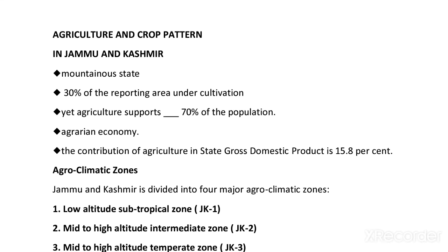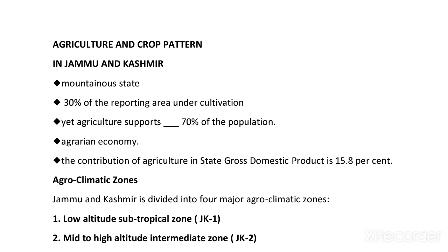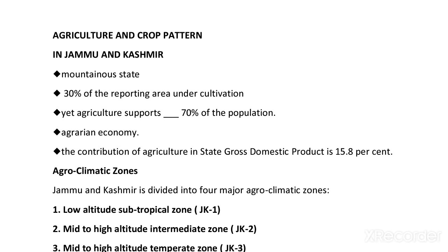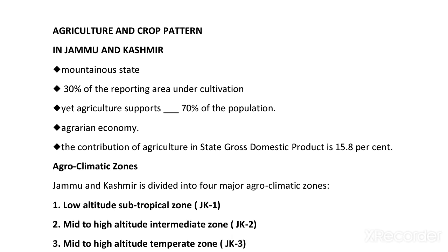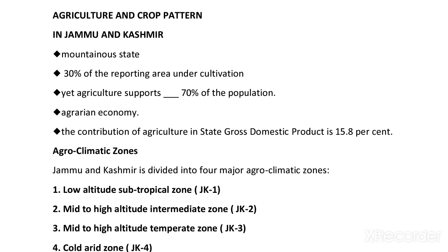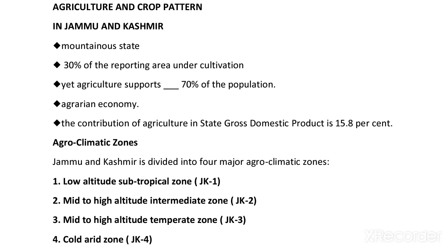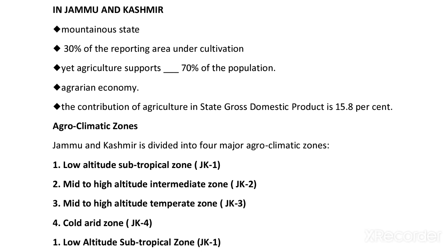Hi guys, welcome to history class. This is Rukhsana Nabi. I hope you are all doing great. Today in this lecture we will discuss agriculture and crop pattern in Jammu and Kashmir. State Jammu and Kashmir is essentially a mountainous state, with only 30% of reporting area under cultivation, and agriculture supports around 70% of the population. So we can say that Jammu and Kashmir's economy is an agrarian economy.